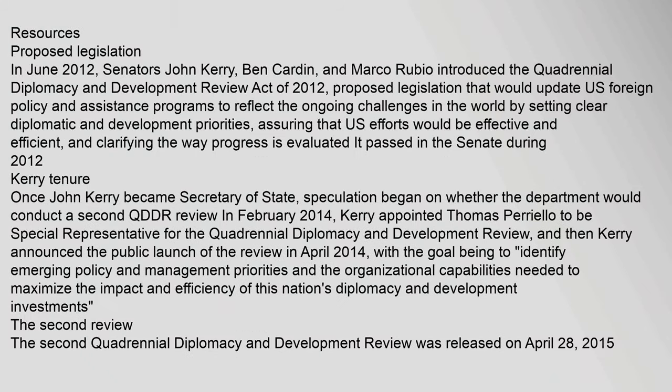In June 2012, Senators John Kerry, Ben Cardin, and Marco Rubio introduced the Quadrennial Diplomacy and Development Review Act of 2012 — proposed legislation that would update U.S. foreign policy and assistance programs to reflect ongoing challenges in the world by setting clear diplomatic and development priorities, assuring that U.S. efforts would be effective and efficient, and clarifying the way progress is evaluated. It passed in the Senate during 2012.